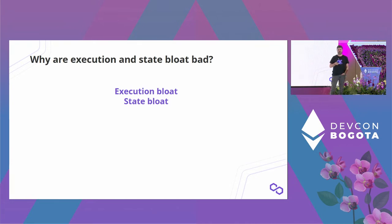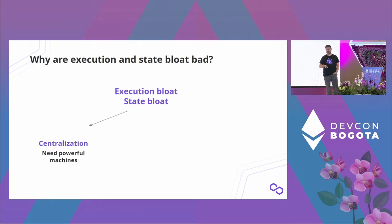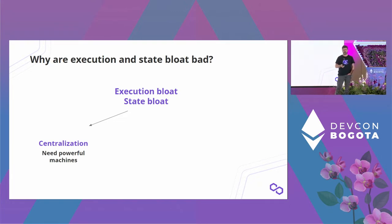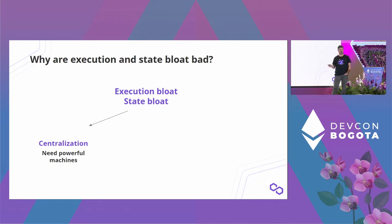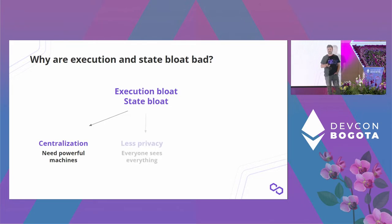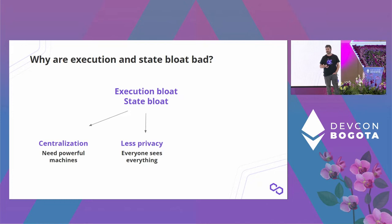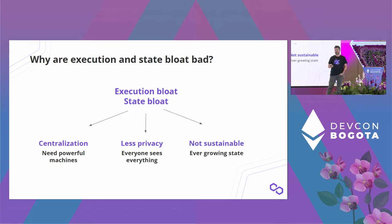Why are these things challenges? If you have state bloat and execution bloat, you need powerful machines — say, thousands of transactions per second — to process that. If you have a terabyte-sized state, you need a large machine to hold it in memory, and that leads to centralization. If you don't have good solutions, you might as well just build a centralized rollup. Because everyone sees everything and needs to re-execute transactions, there is inherently less privacy. And state bloat is not sustainable — you can only scale the rollup as fast as hardware scales.